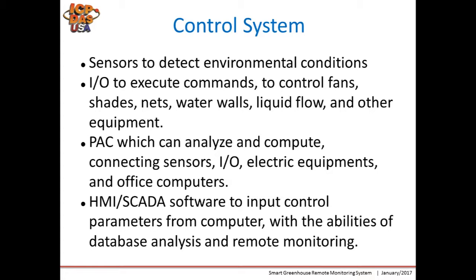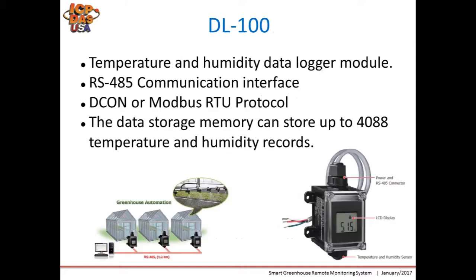A control system requires sensors to detect environmental conditions such as temperature and humidity inside and outside the greenhouse, as well as sunshine, wind direction, and speed. Second, we need I/O to execute commands to control fans, shade nets, water walls, liquid flow, and other equipment. We also need a controller to connect those sensors, I/O, electrical equipment, and computers. Lastly, we need HMI or SCADA software to input control parameters from a computer, with the ability for database management, analysis, and remote monitoring.